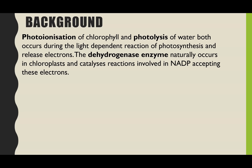Starting with photosynthesis: photoionization of chlorophyll and photolysis of water both occur in the light-dependent reaction because they require light energy. In both photoionization and photolysis, electrons are released. The dehydrogenase enzyme, which naturally occurs inside chloroplasts, catalyzes reactions involved in NADP — the coenzyme — accepting or picking up those released electrons.